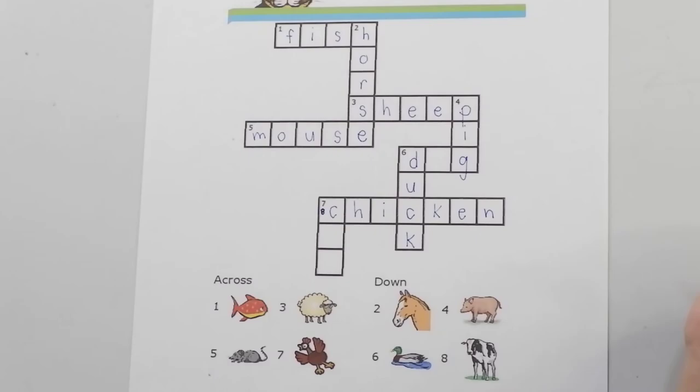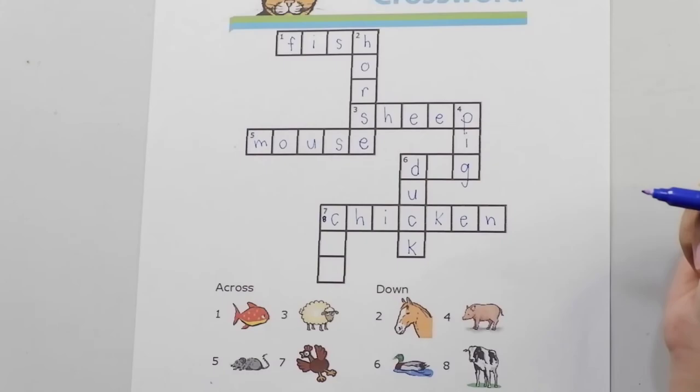C is already there. K-E-N. Chicken. Perfect. No extra boxes and no missing ones too.